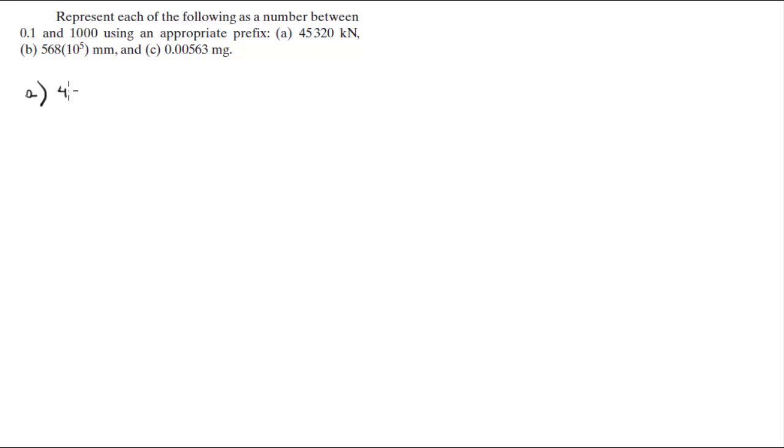So first we got part a: 45,320 kilonewtons. Now this one's pretty easy. The very systematic way of doing this is go to newtons, in other words go to the unit without the prefix, and then add the new prefix.